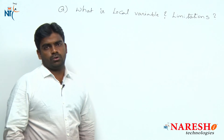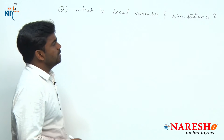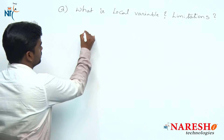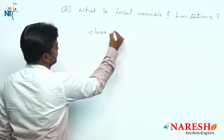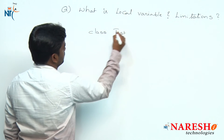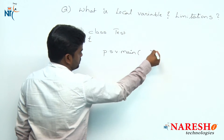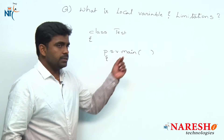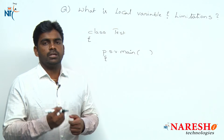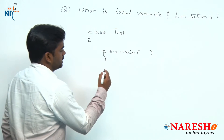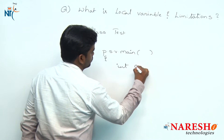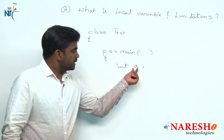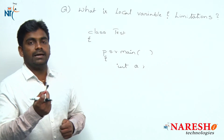So what is a local variable? Simply, defining any variable inside a block or method. For example, inside the main method — with the standard String args — if you declare any variable inside the method or block, that comes under a local variable. Suppose 'a' is a local variable.